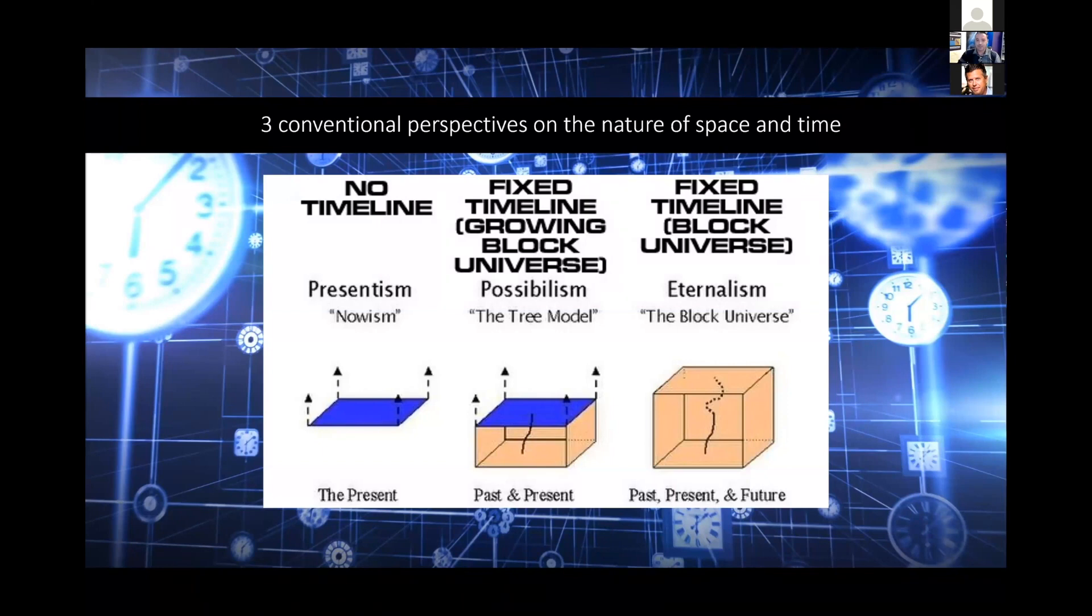But what we will see as we begin to investigate the space memory entanglement nexus, we will see how the thing that we do call time is bi-directional and world lines can be changed. So this middle depiction, this fixed timeline, is inaccurate, incorrect.